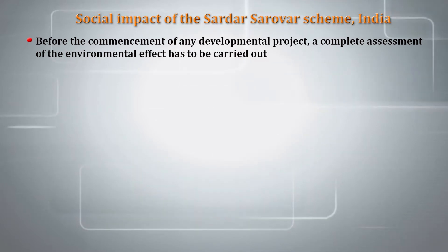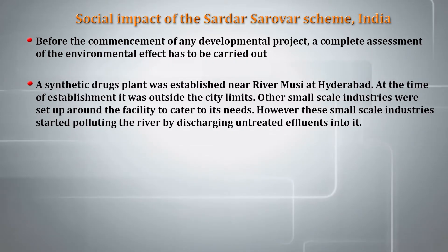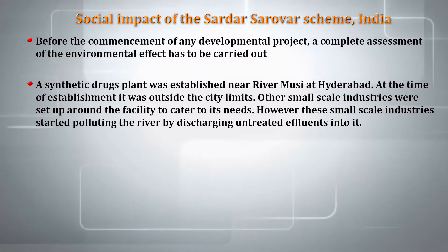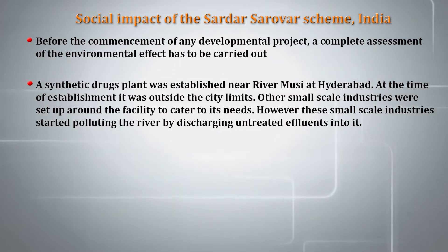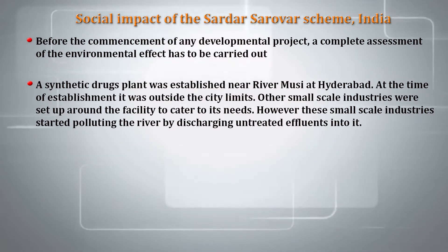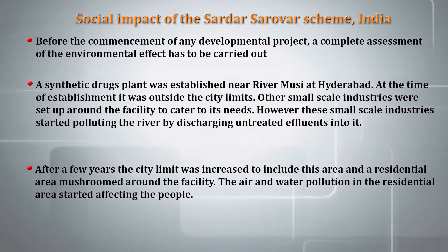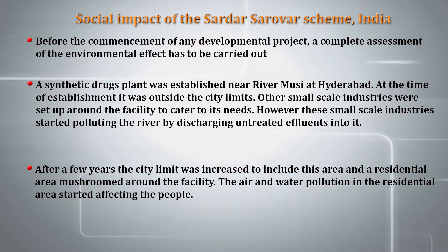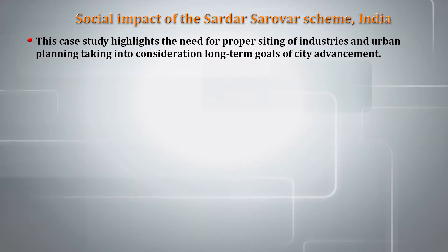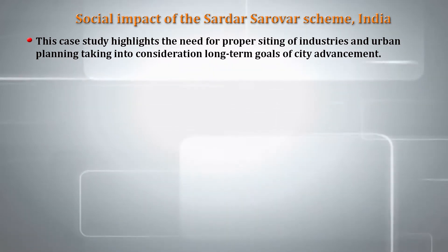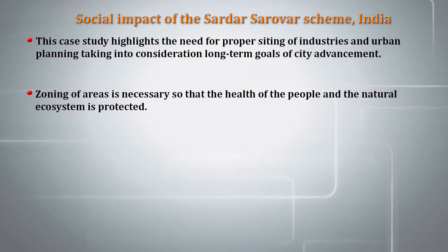A synthetic drugs plant was established near the river Musi at Hyderabad. At the time of establishment, it was outside the city limit. Other small-scale industries were set up around the facility to cater to its needs. However, the small-scale industries started polluting the river by discharging untreated effluents into it. After a few years, the city limit was increased to include this area, and a residential area mushroomed around the facility. Air and water pollution in the area started affecting the people. This case study highlights the need for proper siting of industries, urban planning, and long-term goals for city advancement. Therefore, zoning of areas is necessary so that the health of people and the natural ecosystem is protected.